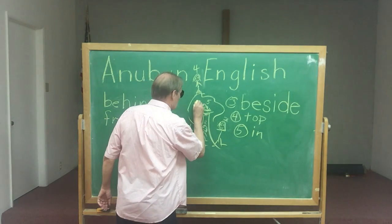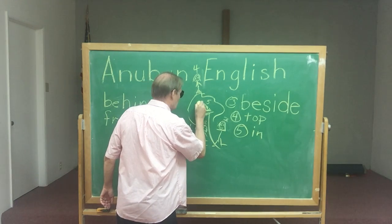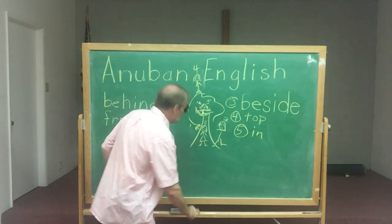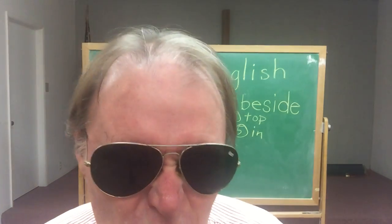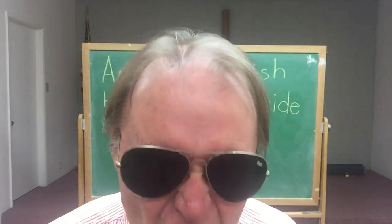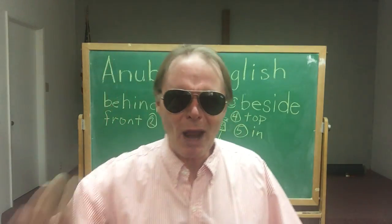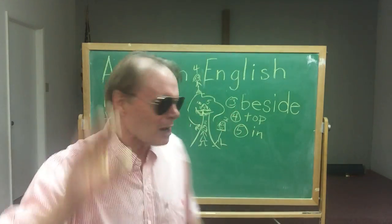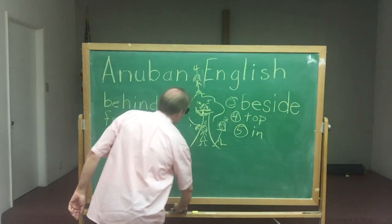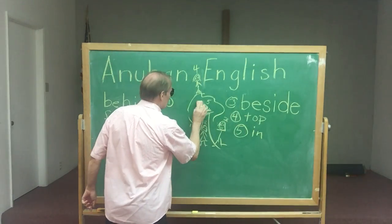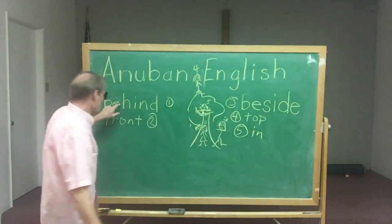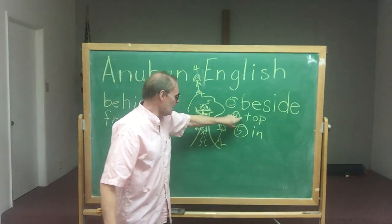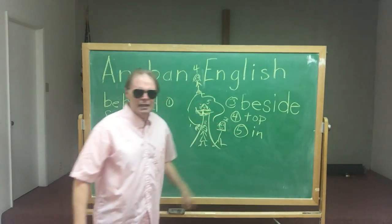There's a bird in the tree, and the bird's saying, 'Get out of my tree! Get out of my tree!' So we have behind, in front, beside, on top, and in. There's one more we could do — number six: under!